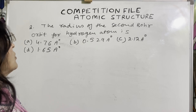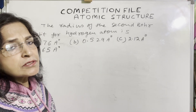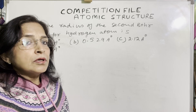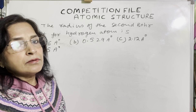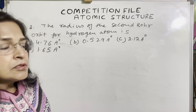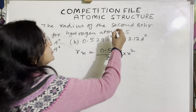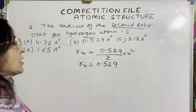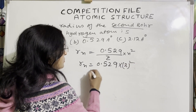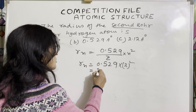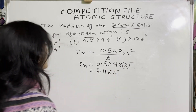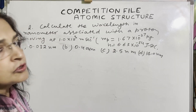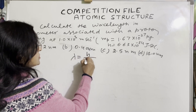Next question: The radius of the second Bohr orbit for hydrogen atom. The question is simple — you just need the standard formula. The radius formula gives r = 0.529 × n² Å. For n = 2: r = 0.529 × 4 = 2.116 Å. This answer is closest to option C.